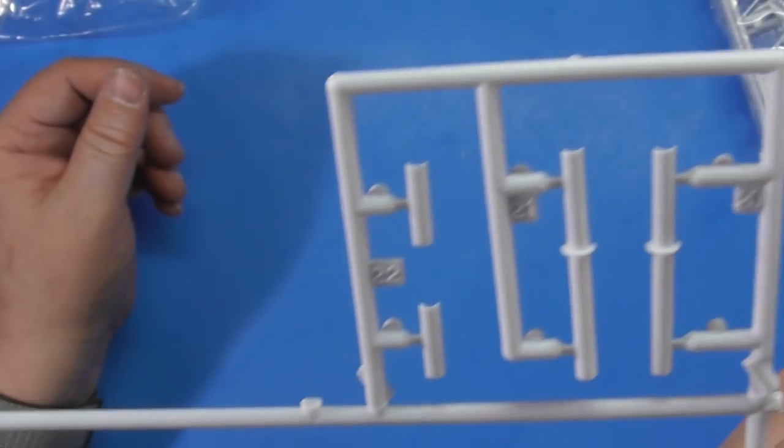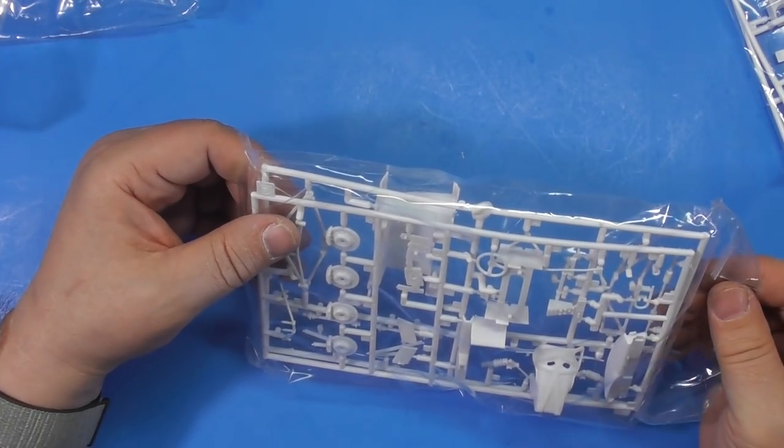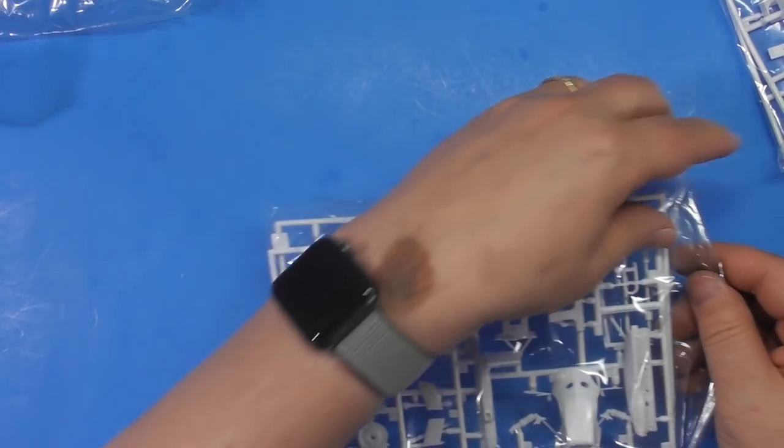But I do know some stuff about Revell car kits and they've always got good engine detail. Especially anything after the late 80's. And these look like interior parts, brakes, dashboards, suspension parts.